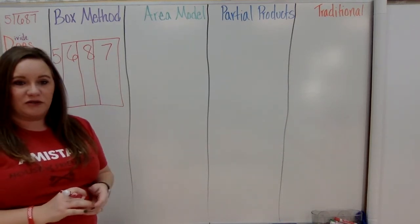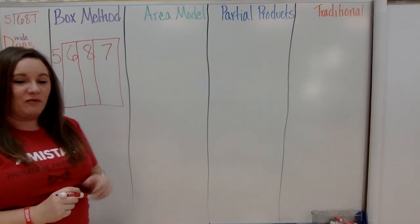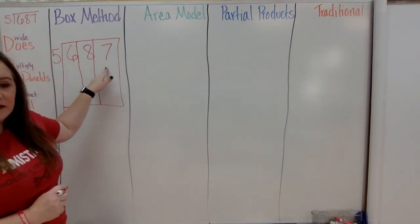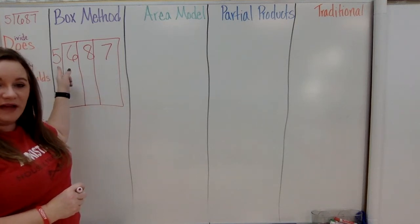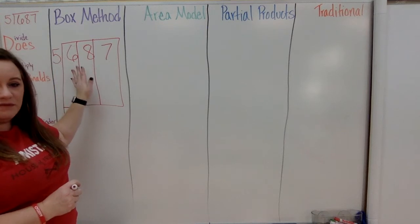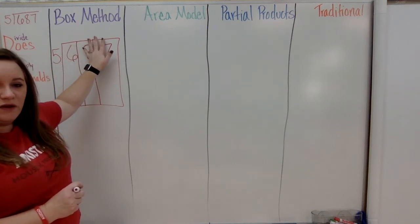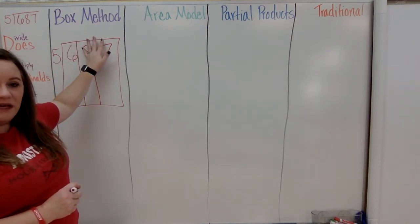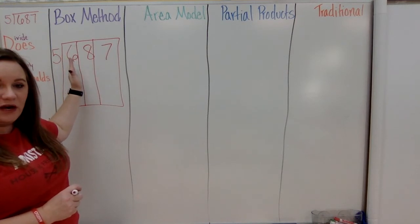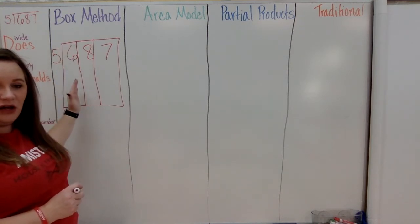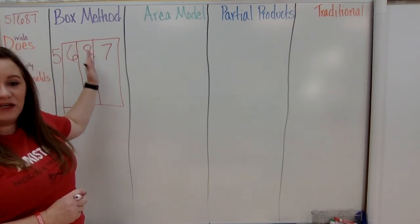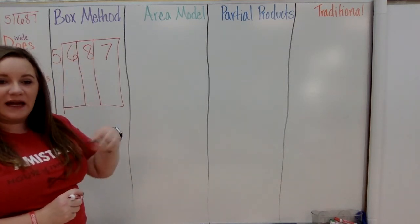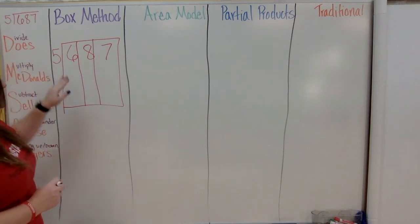I tell students that the numbers on the inside of the box are how many M&Ms they have, and the number on the outside is how many friends they have. With this method, you ignore the other columns to begin with and only focus on the number in the first column. Once you solve that column, you move on to the next and add to it each time.